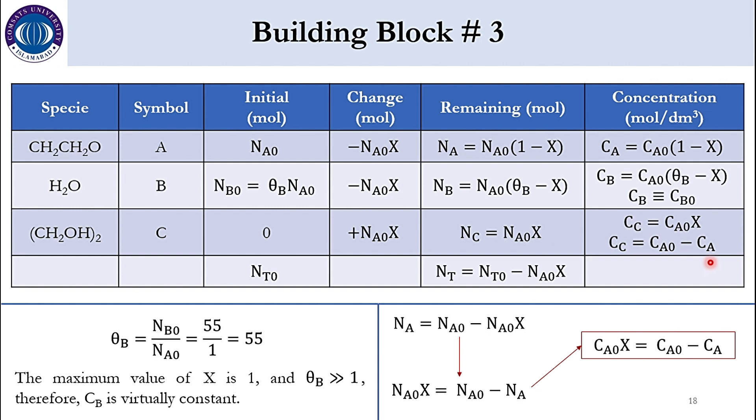Now from where that equation actually came. If you look here. NA is equal to NA0 minus NA0x. Or we can say NA0x is equal to NA0 minus NA. If you rearrange it NA0x will go here. NA will come here. So accordingly NA0x is equal to NA0 minus N of A. And if you divide the equation by capital V. So CA0x is equal to CA0 minus CA. So accordingly this CA0x is replaced by CA0 minus CA.